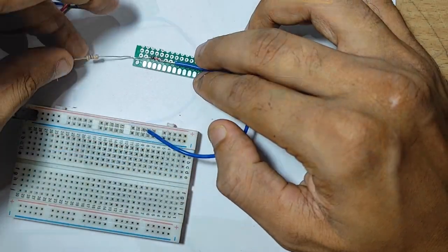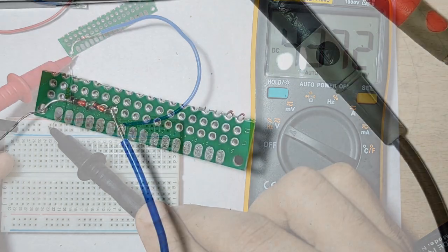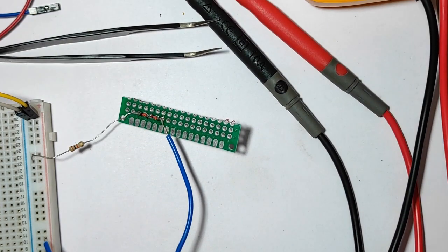Now the voltage is 4.3 volts. Connect two diodes in series and check the voltage.